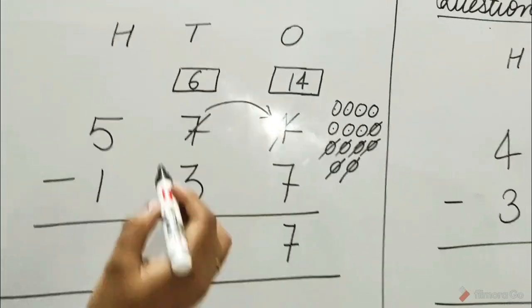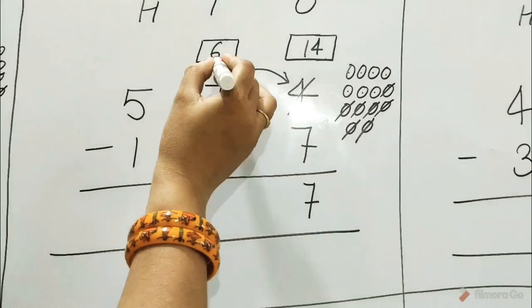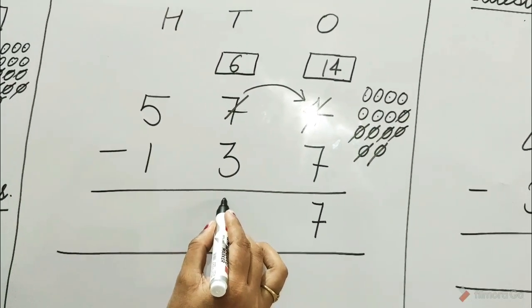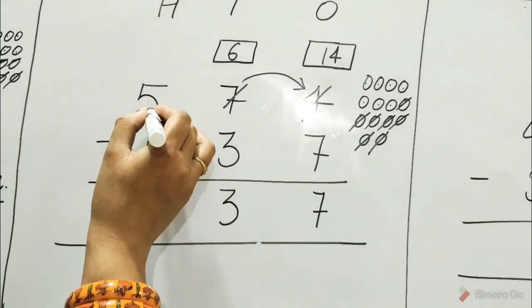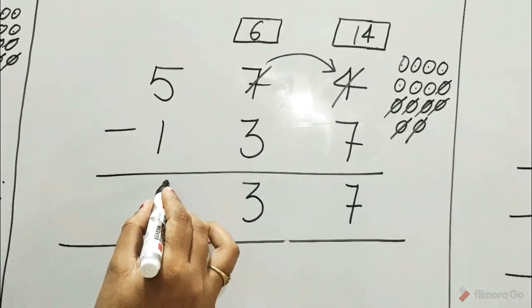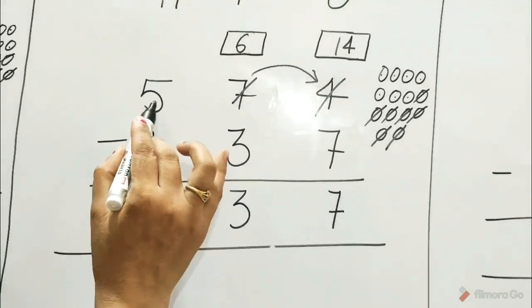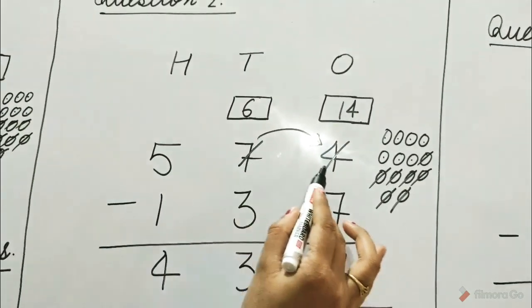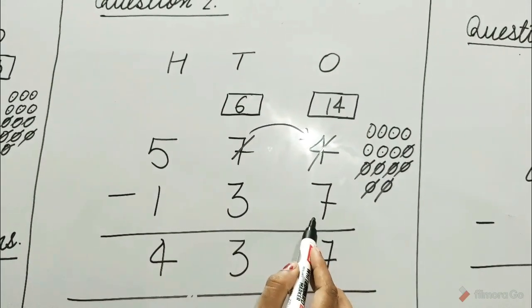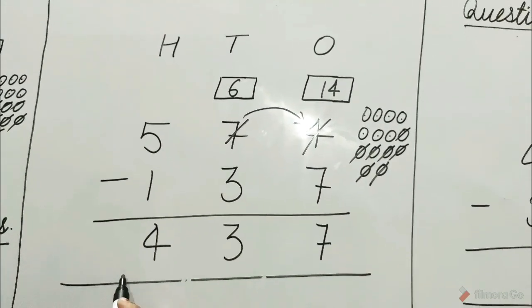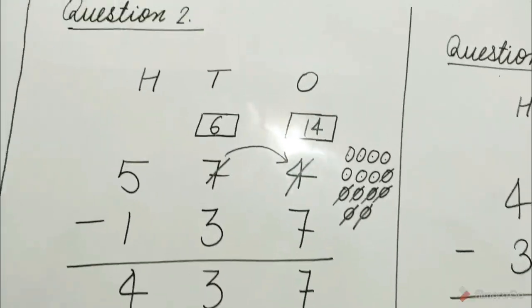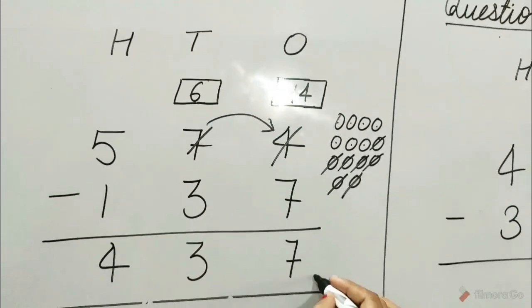Write 7 in the ones column. Subtract the tens column. 6 minus 3 is equal to 3. 5 minus 1 is equal to 4. 594 minus 137 is equal to 457. Answer.